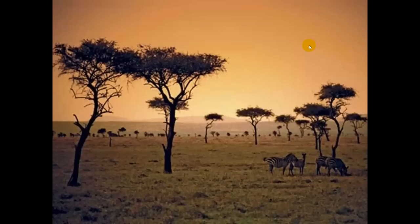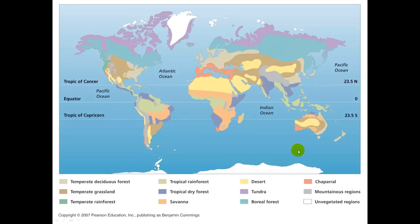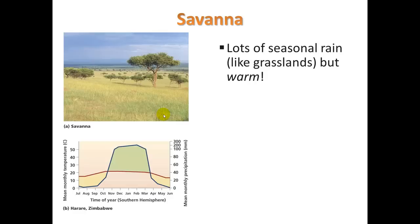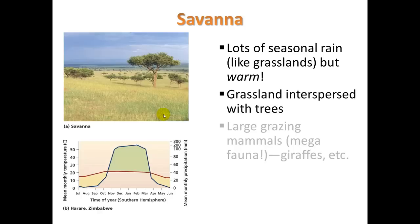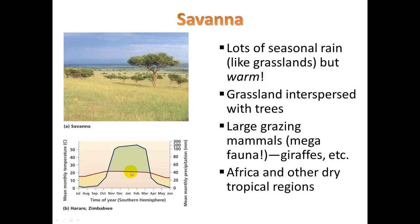Let's move to the savannah. Typical savannah scene — zebras. We find this biome largely in Africa, and also in South America. Characteristics include lots of seasonal rain — more rain than in grasslands — but what really distinguishes savannah from grasslands is that it's much warmer. You have grassland interspersed with relatively few trees, and large grazing mammals. On this continent we had a lot of buffalo; in the savannah we get other megafauna like giraffes, rhinoceros, and elephants.